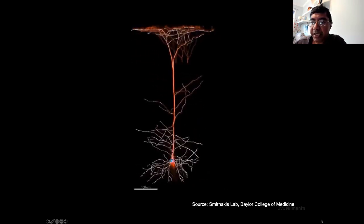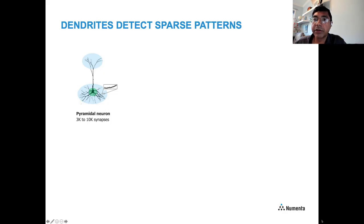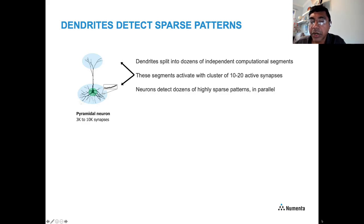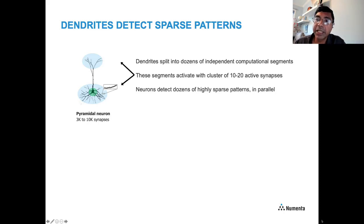I want to focus on these dendrites, because it turns out dendrites actually detect sparse patterns. A typical pyramidal neuron gets about 3,000 to 10,000 inputs converging onto synapses. The full tree of dendrites is split into dozens of independent computational segments. Each segment becomes activated — initiating a dendritic spike — if there's a cluster of just 10 to 20 active synapses physically co-located on that segment. So just 10 to 20 out of thousands of synapses are enough to initiate a dendritic spike, and all segments operate in parallel, detecting dozens of highly sparse patterns simultaneously.